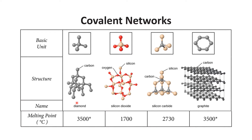Compounds which have covalent networks are also solids. Examples are diamond, silicon dioxide, silicon carbide, and graphite. In the first three examples the structure is tetrahedral, but graphite is different. In covalent networks, the interactions also depend on bond length — if the bond length is higher, the interaction is weaker and the melting point is lower. For example, the melting point for diamond and graphite is the same, but for silicon dioxide the melting point is lesser, meaning the bond length is higher for silicon dioxide.